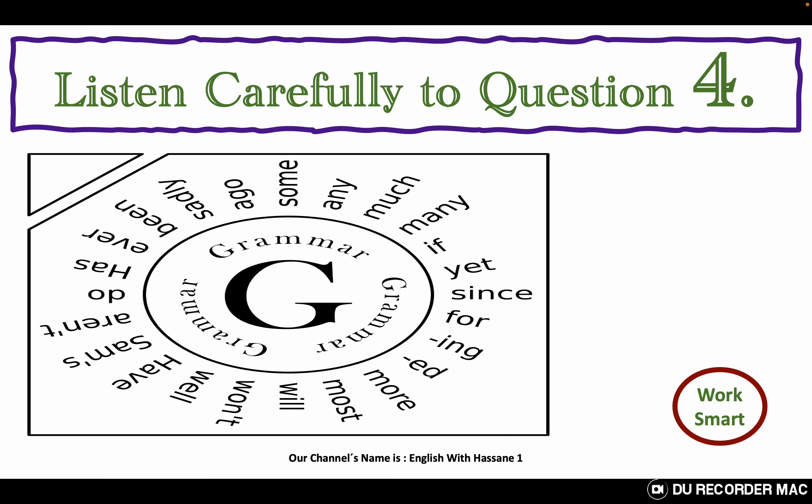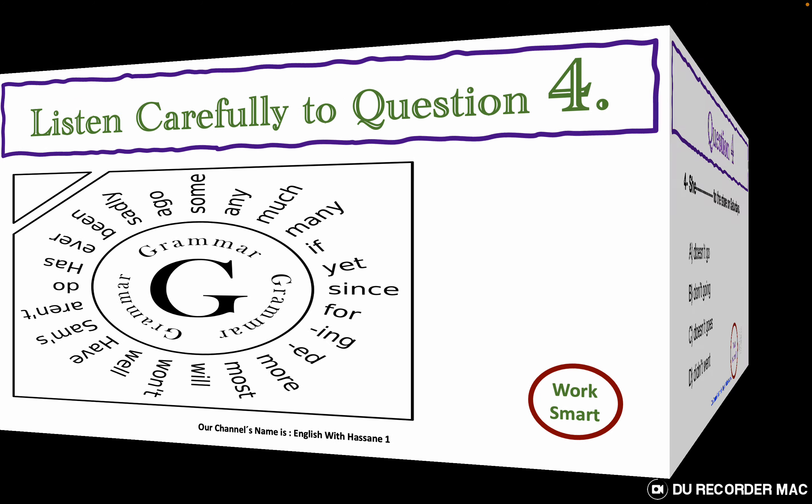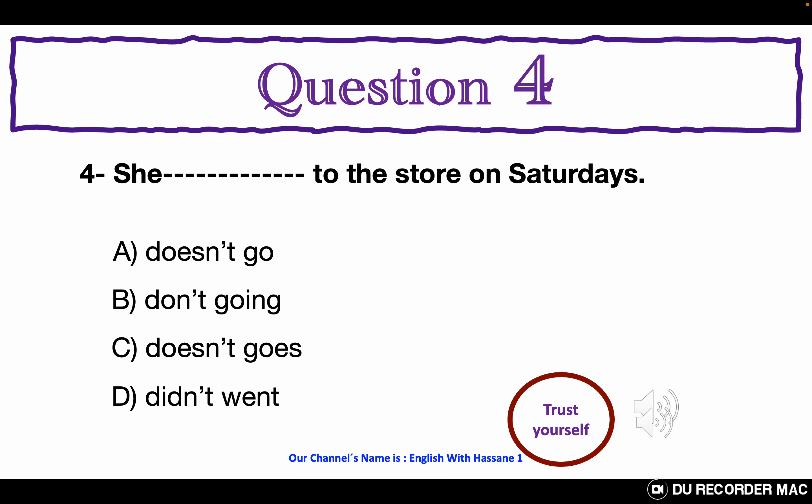Listen carefully to question 4. All the questions of this grammar test are in the present simple negative. Choose the best answer A, B, C, or D. She ___ to the store on Saturdays. A. Doesn't go. B. Don't going. C. Doesn't goes. D. Didn't went.